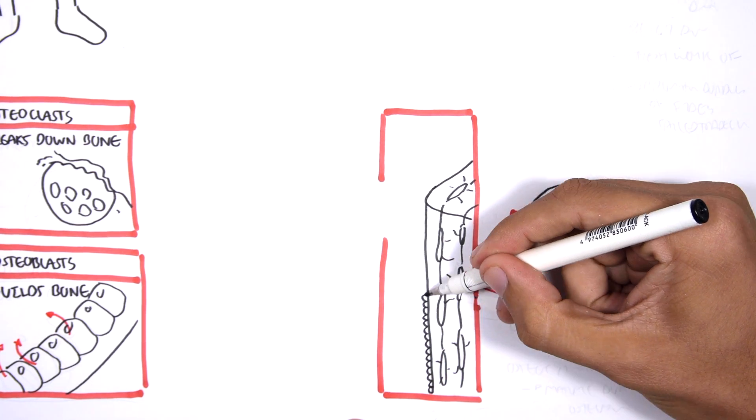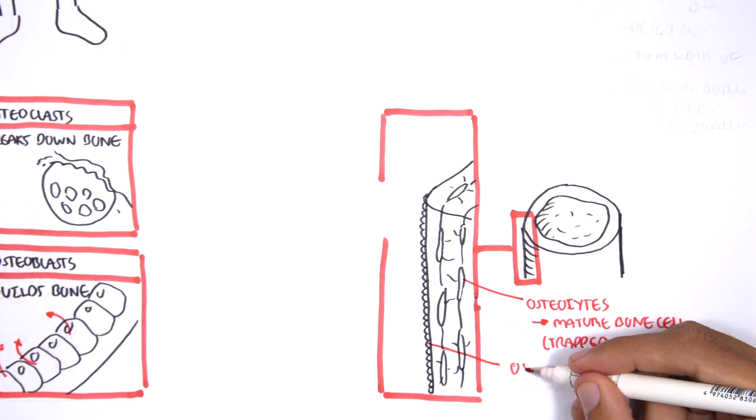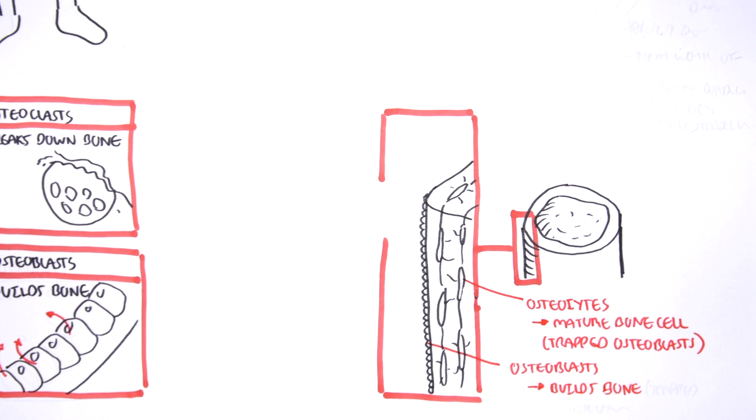Then, on the very outside are the actual osteoblasts, which are cells that are building the bone, secreting matrix. Again, when these osteoblasts become trapped in the bone matrix, they actually become osteocytes and form the compact bone.